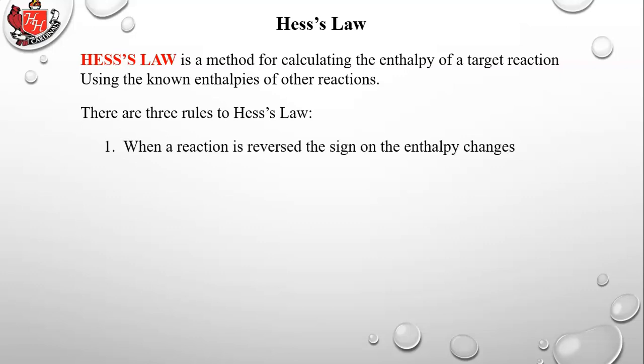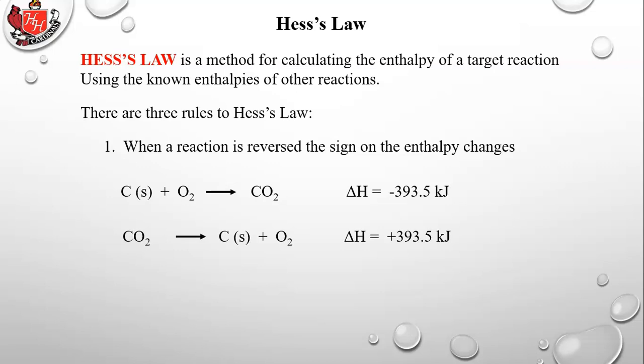Rule one: when a reaction is reversed, the sign of the enthalpy changes. If we take our reaction with a delta H of negative 393.5 kilojoules — exothermic — and run it in reverse, putting the right side on the left and the left side on the right, you change the sign on the enthalpy. So it would require positive 393.5 kilojoules of energy to run in reverse — an endothermic reaction.